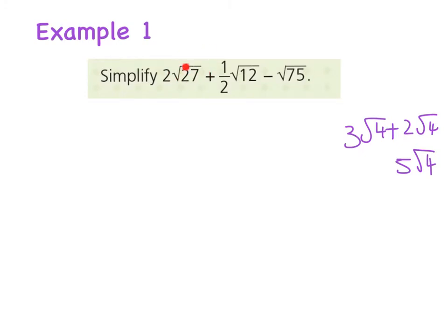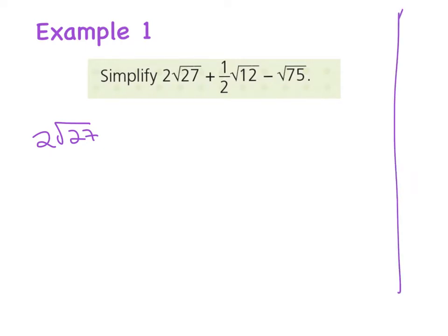So here we have √27, √12, and √75. So we need to do something different. First things first, I'm going to try and write these in a different way. So I'm going to first of all take the 2√27 and think, well here are my square numbers. I'm going to write them in the corner.